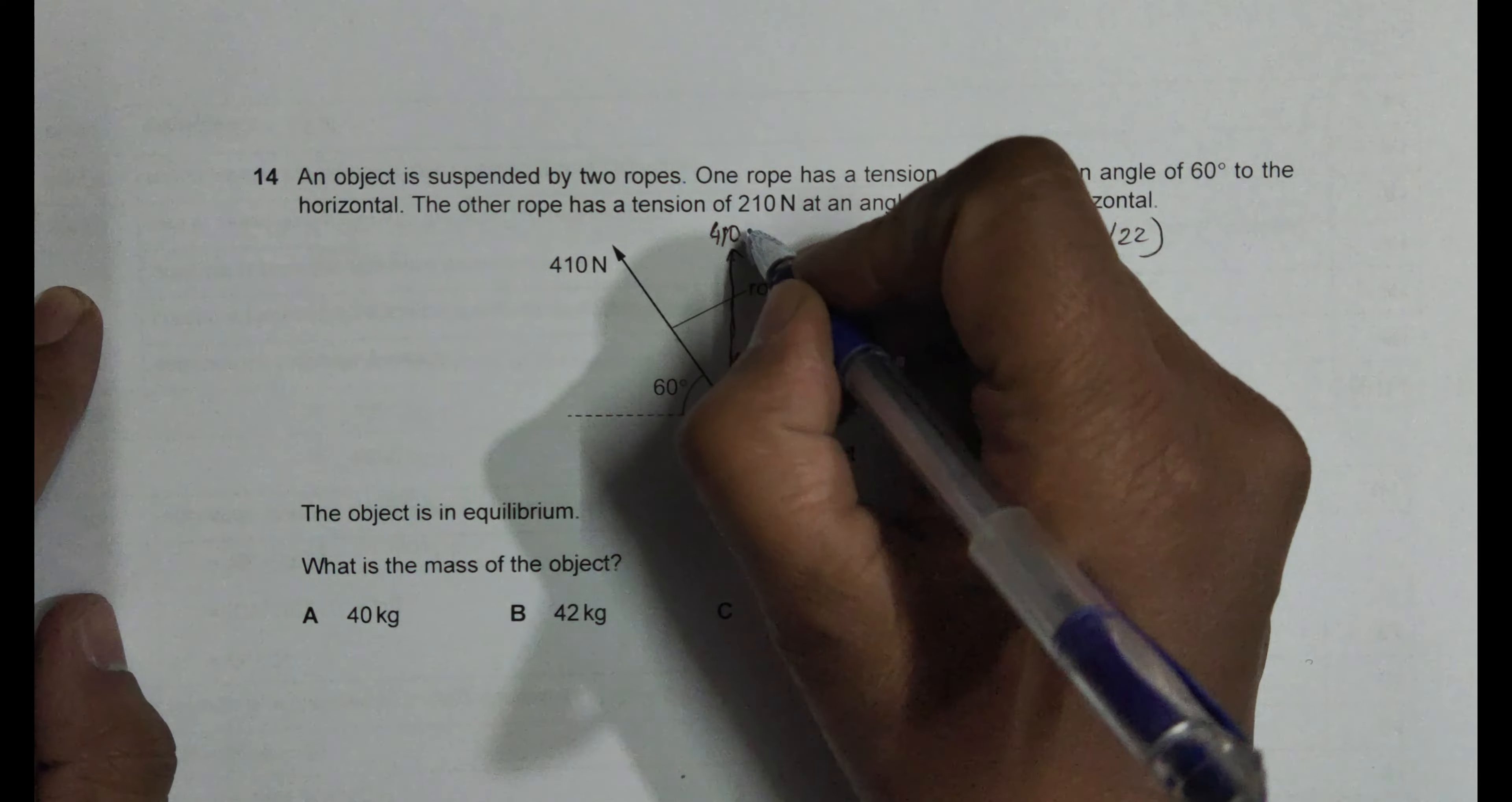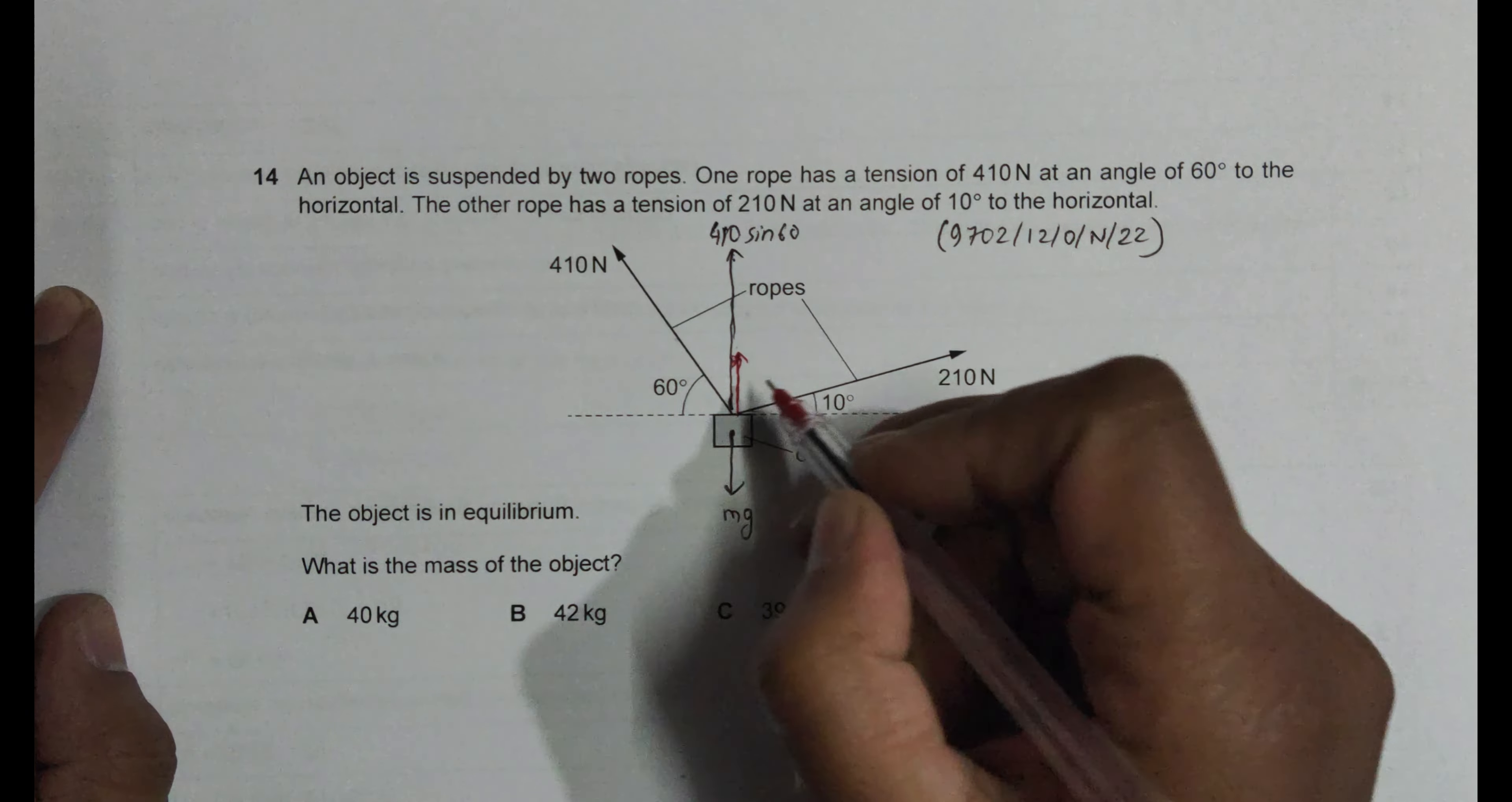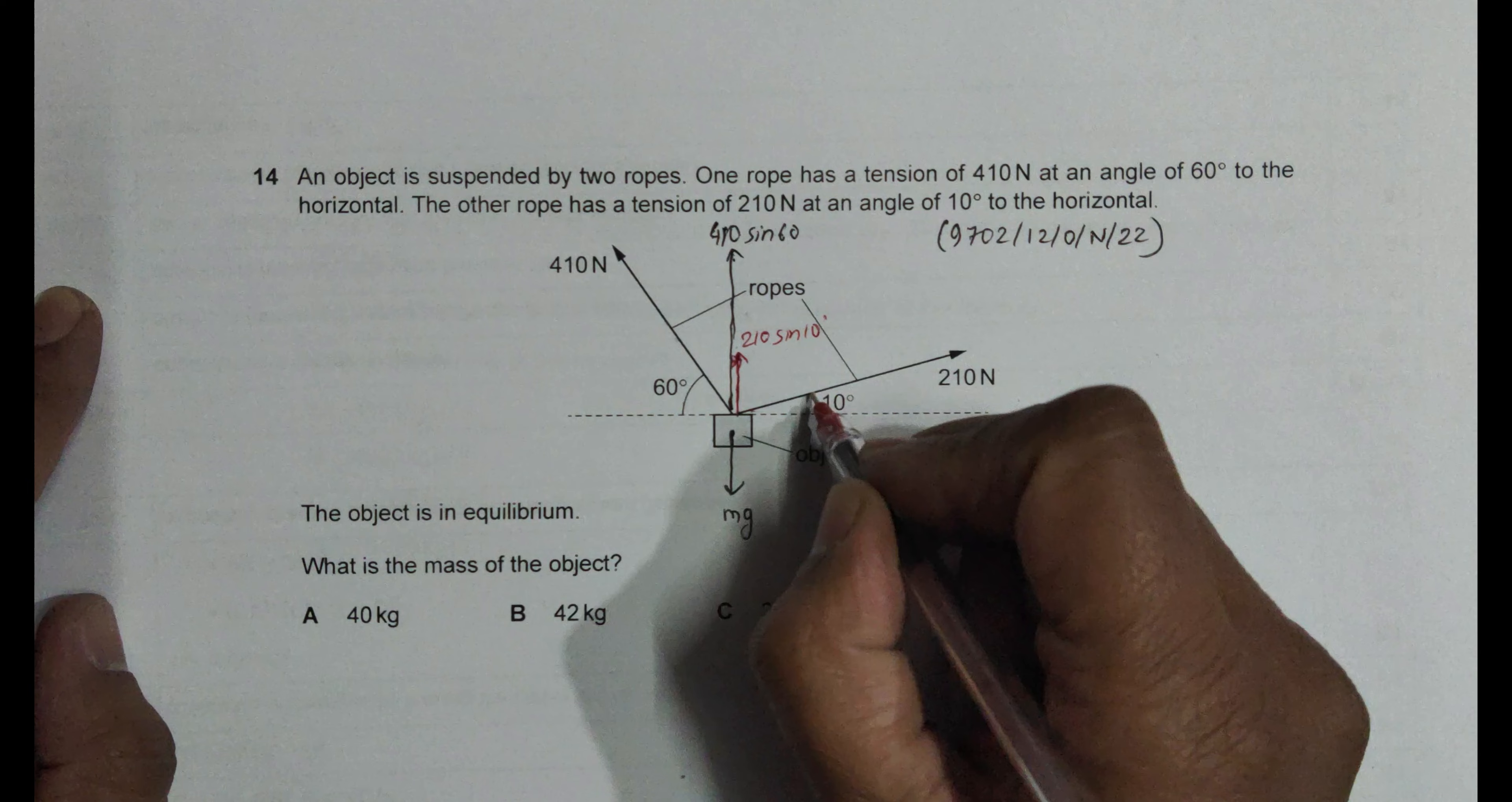So their value should be equal to its value. So since this is cos, this should be sine of 60. Since this is cos, this should be sine. For this thing, this should be cos, so this should be sine. So it is 210 sine of 10 degrees.